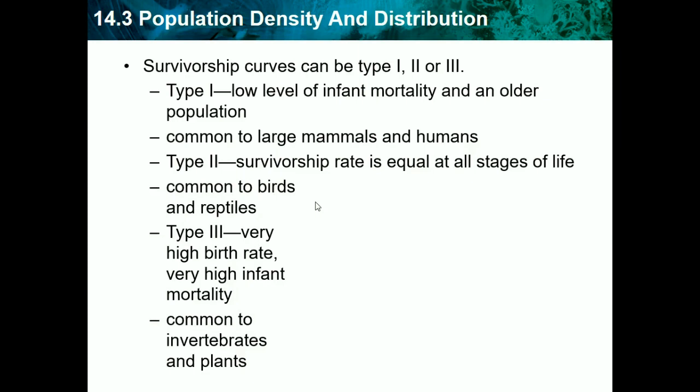Type 1 is like humans — we give live births, have one or two kids, and try to keep them safe. Type 2 organisms have a few more offspring but still try to protect them, though they face many dangers. Type 3 is like fish, which hatch thousands of eggs at once, but more than half die off in the first couple of weeks — resulting in high infant mortality.